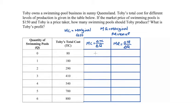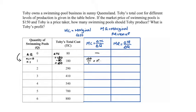In this problem the quantity change is always equal to one, so we're essentially just taking the difference in total cost as we increase production. When quantity is zero, marginal cost is not defined so I'll put a dash there. Going from zero to one unit, the change in total cost is 180 minus 80, which is 100, and the change in quantity is one, so marginal cost equals 100.